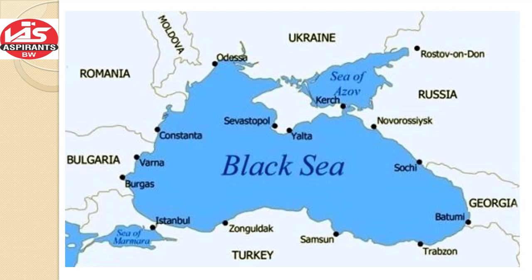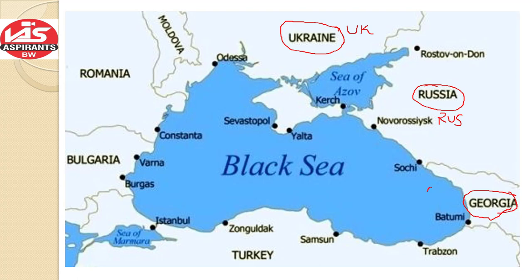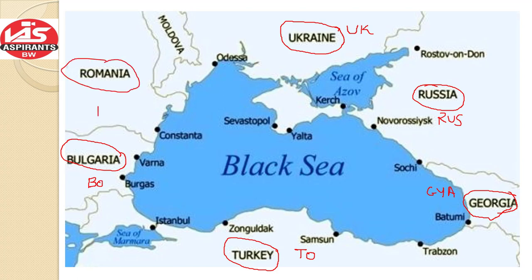So this is the Black Sea. What are the countries surrounding it? First one is Ukraine — we will take Ukraine as UK. Second one is Russia — we will take Russia as Rus. G is for Georgia — we will take Georgia as Gaya. Then we have Turkey — for Turkey we will take Toh. The next country is Bulgaria — we will take B-O, Bo. And for Romania we will take R-E, making it Bor.